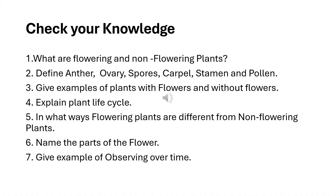Check your knowledge — you can answer these questions by referring to the video. What are flowering and non-flowering plants? Define anther, ovary, spores, carpel, stamen, and pollen. Give examples of plants with flowers and without flowers. Explain the plant life cycle. In what ways are flowering plants different from non-flowering plants? Name the parts of the flower. Give a few examples of observing over time.